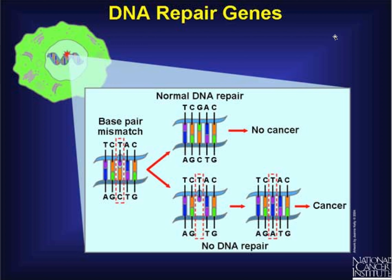Another loss-of-function category is DNA repair genes — a large family of proofreader genes that, like autocorrect or spell-check in Microsoft Word, read through base pairs to make sure everything looks correct and the cell isn't abnormal. Enzyme pairs essentially read through the base pairs to verify normality. If there is a mutation in any of these repair genes, we can have deletions or mismatches, resulting in abnormal DNA and abnormal cells copying themselves. This is another loss-of-function mutation type — DNA repair is a normal function, and when these genes mutate, we lose the ability to proofread or repair genes as they're assembled.